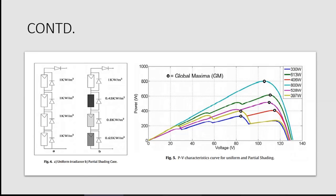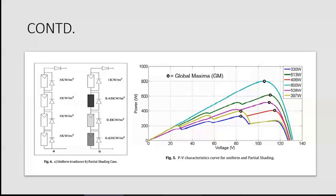There is a diagram here showing the uniform radiance and partial shading cases. As previously mentioned, we use bypass diodes for partial shading conditions so that they don't disturb the rest of the PV system. On the right side, we have the PV characteristics for uniform and partial shading. The light blue line is for uniform radiance, and the other lines show different irradiance levels under partial shading conditions.